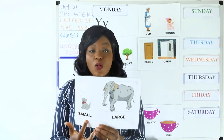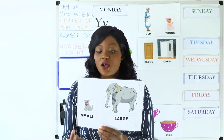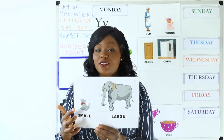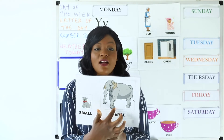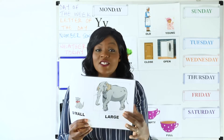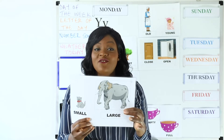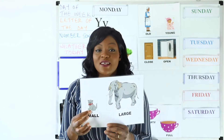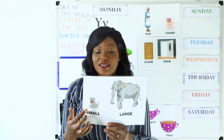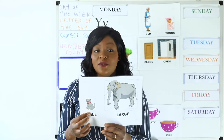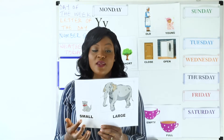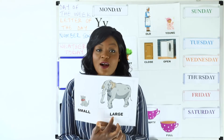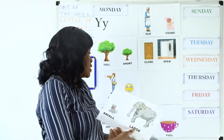Now we have small and large. The opposite of small is large. This is a large elephant — elephants are usually very big and large. And a cat compared to an elephant is a small animal. So the opposite of small is large.